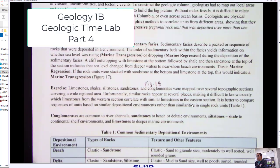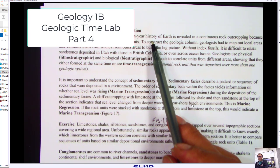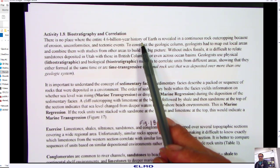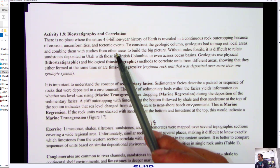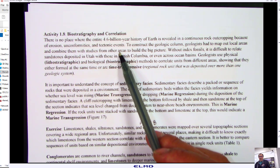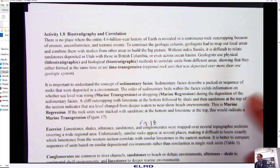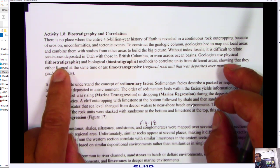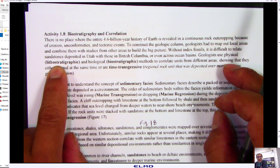All right, so now the next page, biostratigraphy and correlation. This is really important here where we look at rock units and compare them from one area to another because no place on earth has a complete record of rocks. We see erosions, unconformities, tectonic events. There's two ways that we look at it: lithostratic correlation, which means we're just comparing the rock units with no reference to their ages.